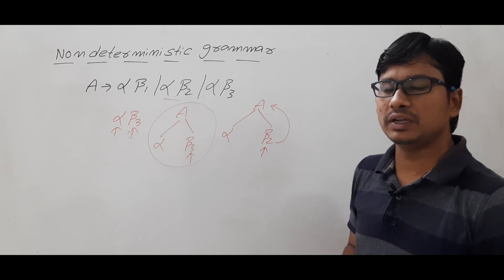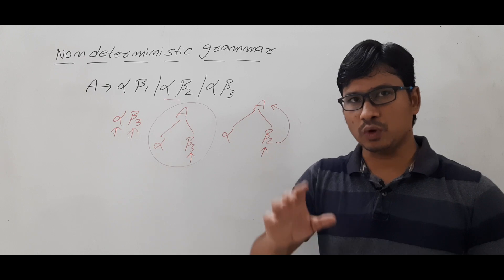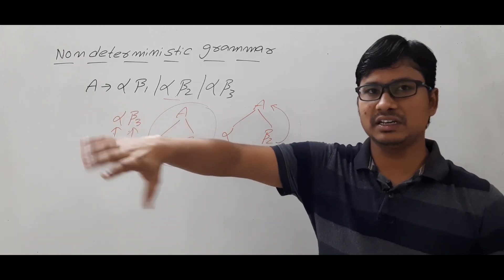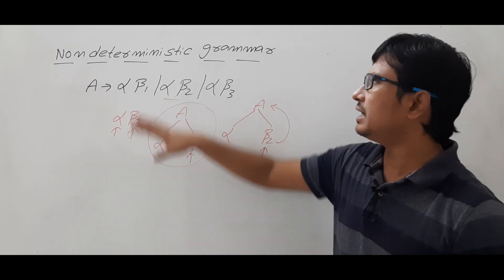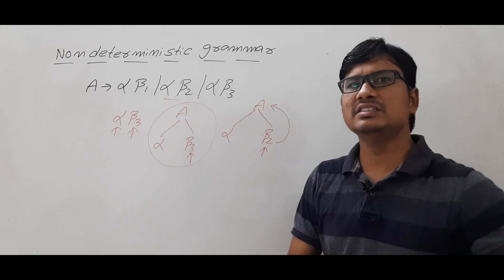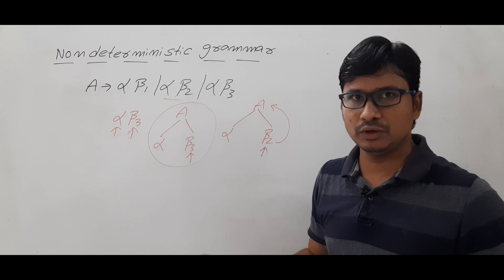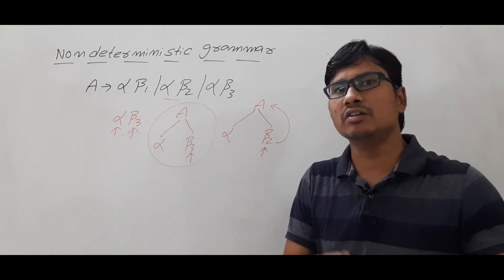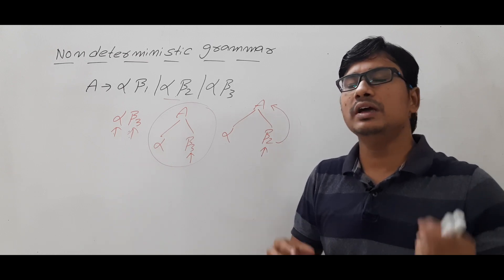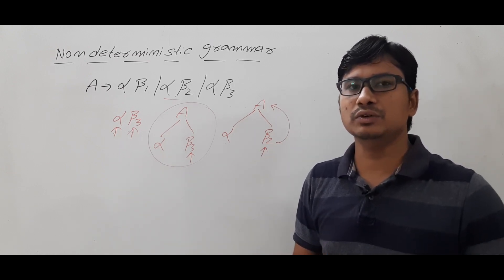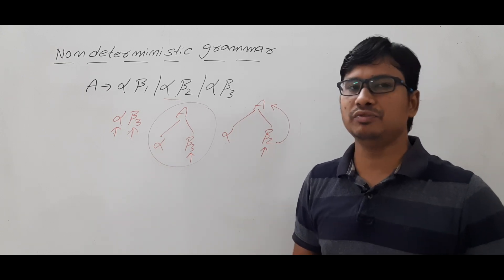But what is the problem here? We did backtracking twice. Backtracking is always a problem because whatever we did, we erased everything — rolled back — and started again. Think of it this way: let's say I am recording this entire video and suddenly someone disturbs me. Then I have to stop the entire video and re-record from the start — that is a very painful task. So I make sure that when I am recording these videos no one disturbs me, because backtracking is very painful.